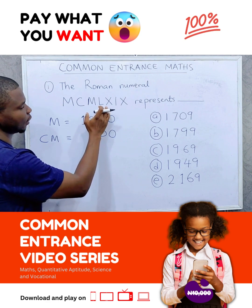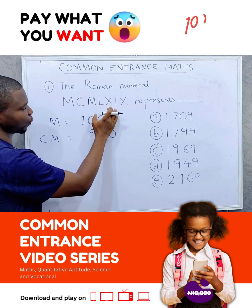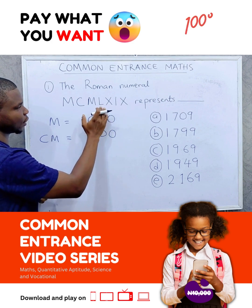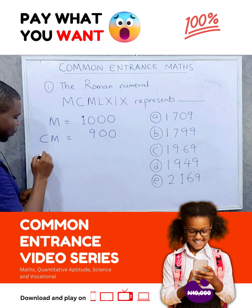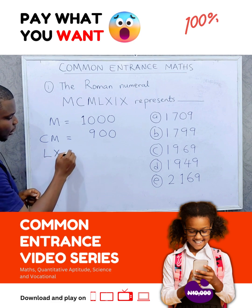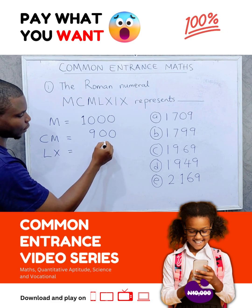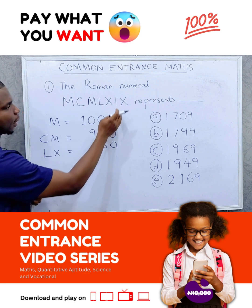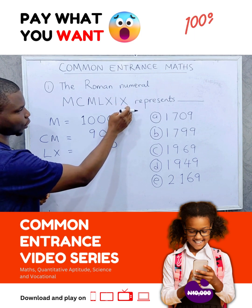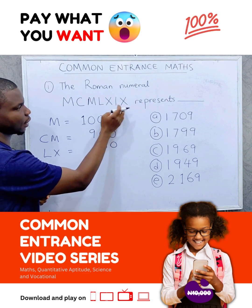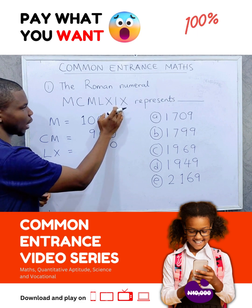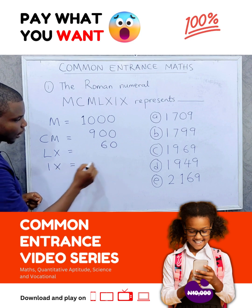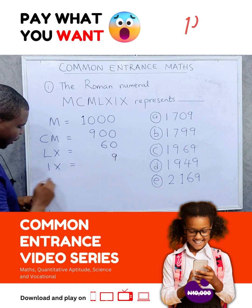Then L — what is in front of it is X. Because X is smaller than L, we add them up. So LX would be 50 plus 10, which is 60. Then I — in front of it is a bigger one, which is 10. We subtract 1 from 10 and that gives us 9. So IX is 9.